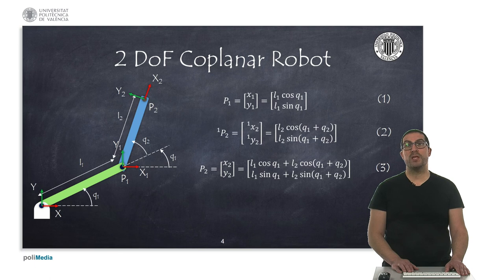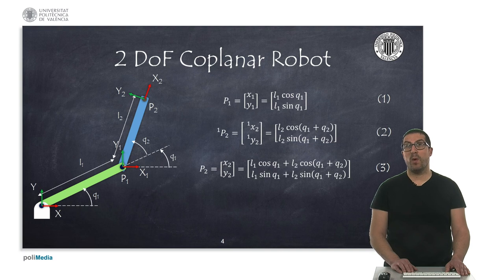Point P2 can be easily computed just given the length of link 1. The coordinates of the point P1 are indicated in equation 1. On the other hand, the position of point P2 with respect to P1 is as indicated in equation 2.